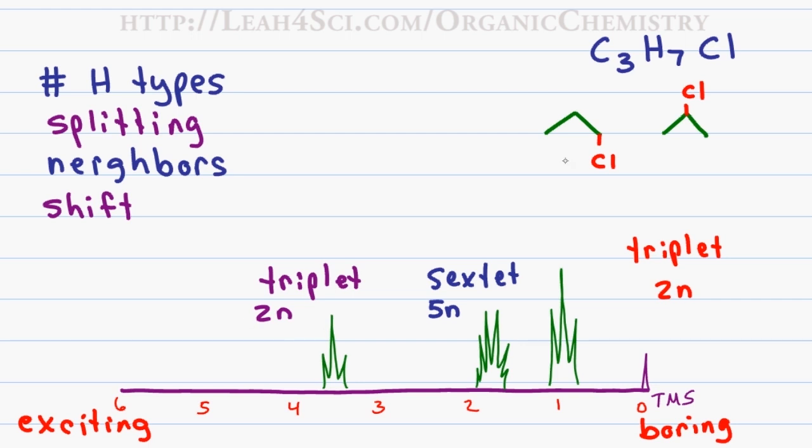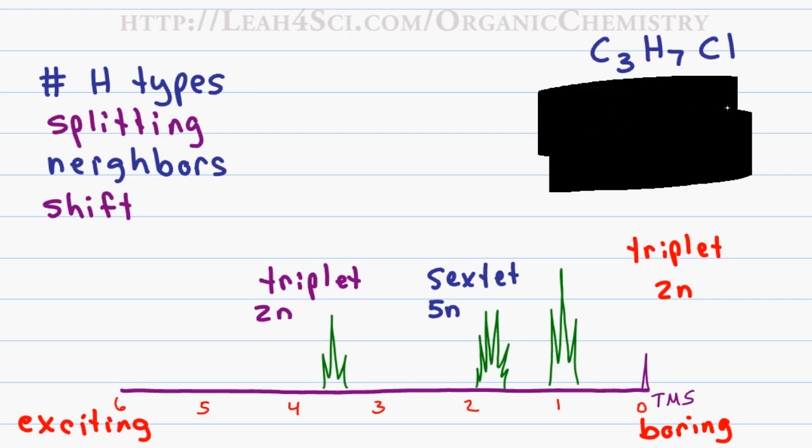Let's ignore the isomers that we drew for now and see what the information on the graph alone tells us about the molecule. Sometimes you will be given either an integral value or a number of hydrogens represented by each peak. But in this molecule, the only thing we know is that there are seven hydrogens in total. And we will have to deduce where these hydrogens show up.